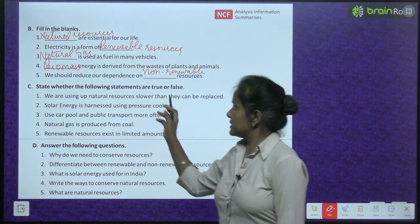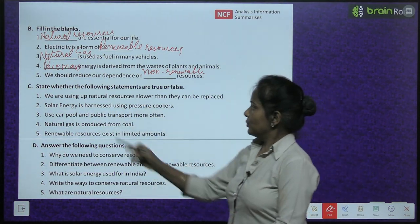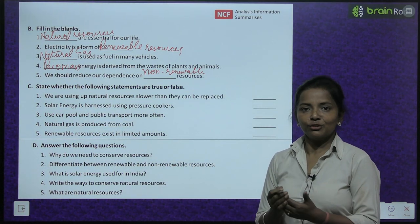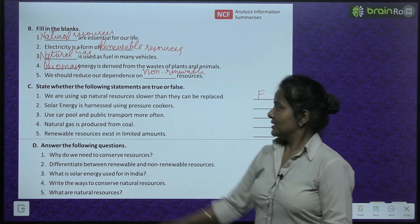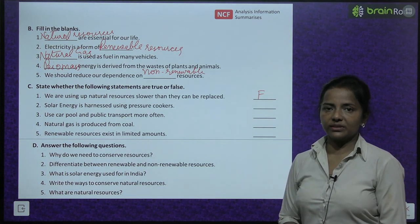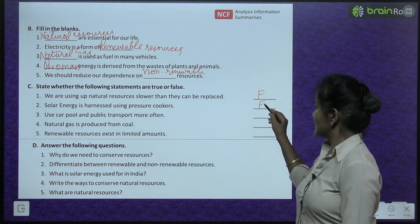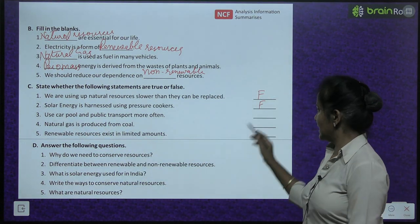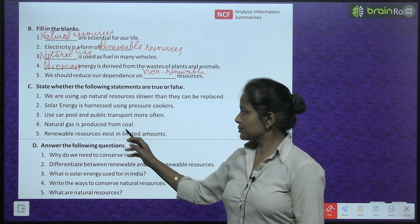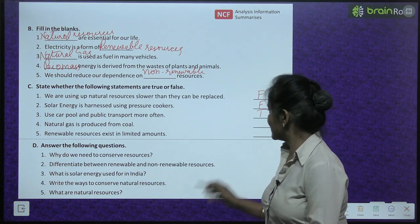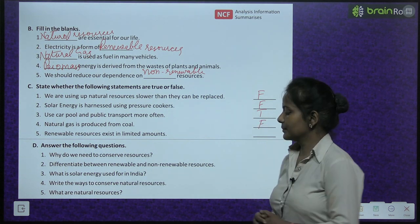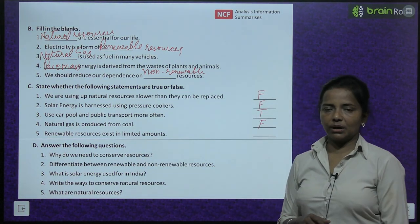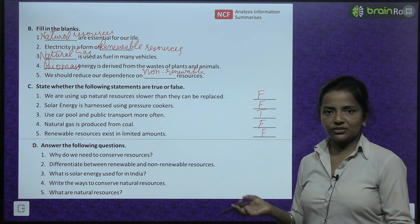True or False: We are using up natural resources slower than they can be replaced — False, we are using them faster. Solar energy is harnessed using pressure cookers — False, it uses solar panels. Use carpool and public transport more often — True. Natural gas is produced from coal — False. Renewable resources exist in limited amount — False, they are found in large amounts.